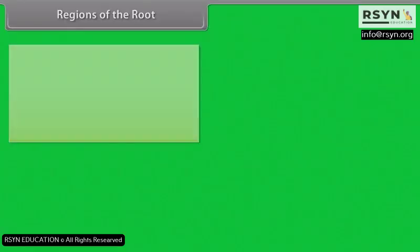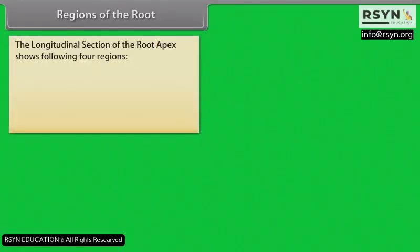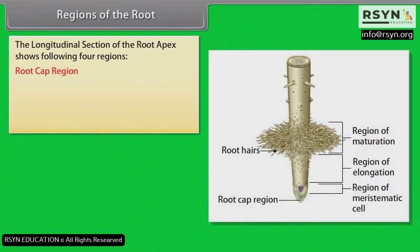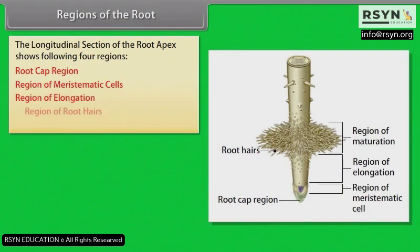The longitudinal section of the root apex shows the following four regions: root cap region, region of meristematic cells, region of elongation, region of root hairs, and region of maturation.